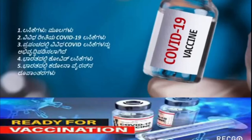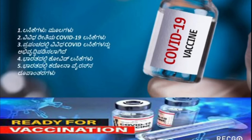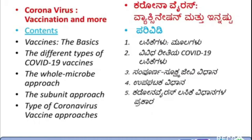In this video, let's understand what is a vaccine, the basics of vaccine, how vaccine is developed, different approaches to develop a vaccine, what are the different vaccines which have been developed world over, what is the difference between Covaxin and Covishield, which is better, and also what is pandemics — pandemics are not new to the world. Let's understand one by one in this video.